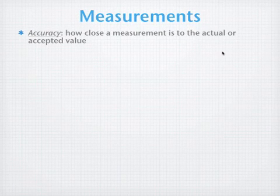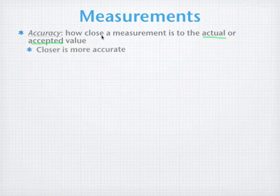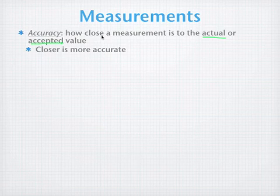In science, the accuracy of a measurement is determined by how close that measurement is to the actual value or the accepted value. We call it the accepted value because sometimes in science the value may be in dispute, and so there's a certain accepted value for that particular measurement. Closer is more accurate, so the closer your value is to the accepted or actual value, the more accurate you are in your measurement.